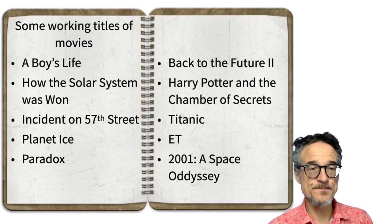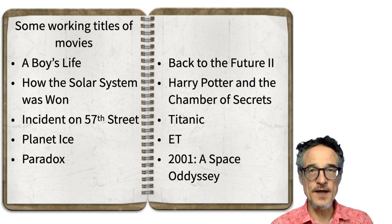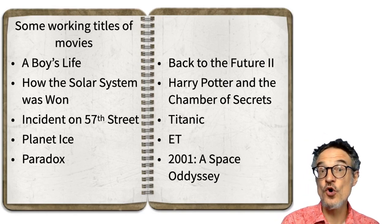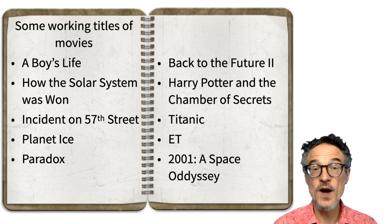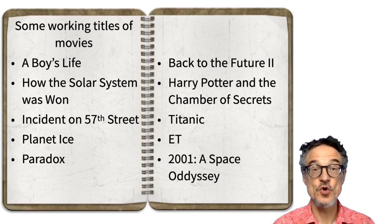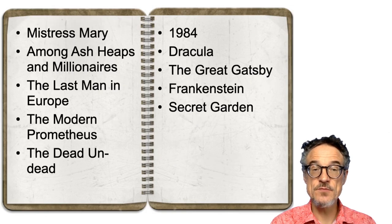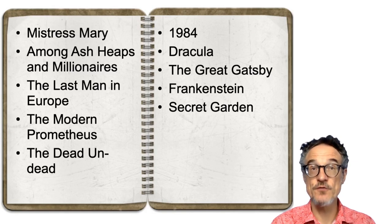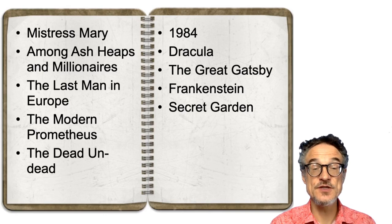I'll give you some examples of working titles to help you. Here are some movies. You may know the titles of the movies on the right. The titles on the left were all names used for these movies while they were being made or before they were made. And here are some novels — you may have heard of these quite famous novels on the right. On the left are the original names of these stories.